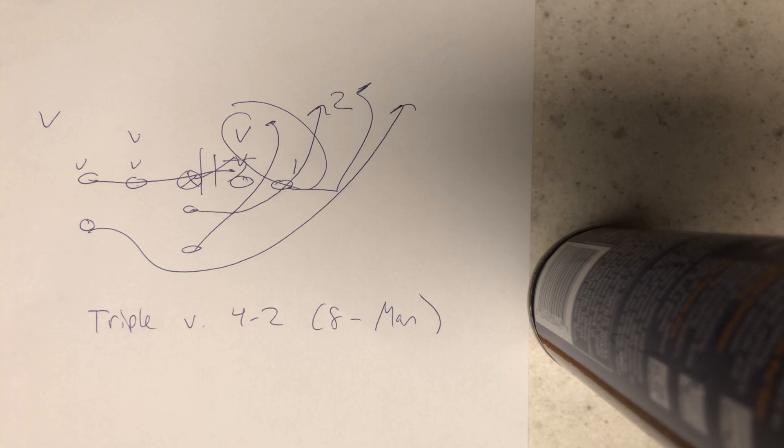You're going to learn how to run the triple option offense, the Army, Navy, Paul Johnson way for eight-man.